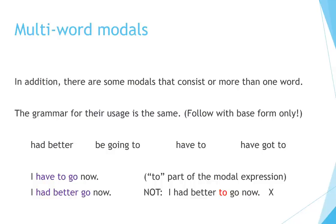Multi-word modals. In addition, there are some modals that consist of more than one word. The grammar for their usage is the same — follow them with the base form only. Some examples are: 'had better,' 'be going to,' 'have to,' 'have got to.' For example: 'I have to go now' — note that 'to' is part of the modal expression. 'I had better go now' — 'to' is not part of this expression; we do not say 'I had better to go now.'